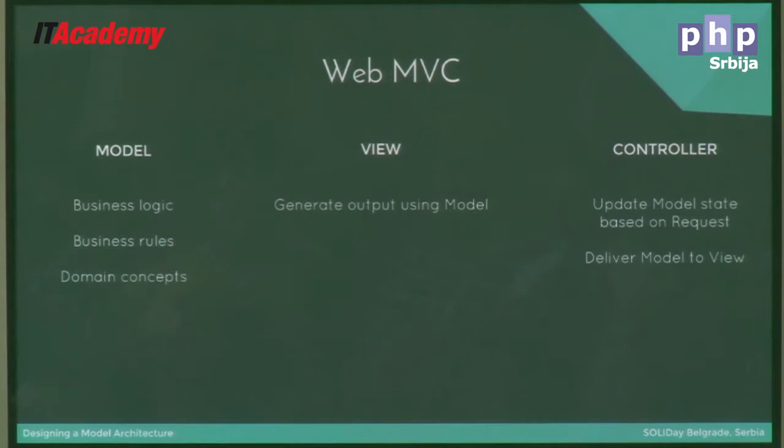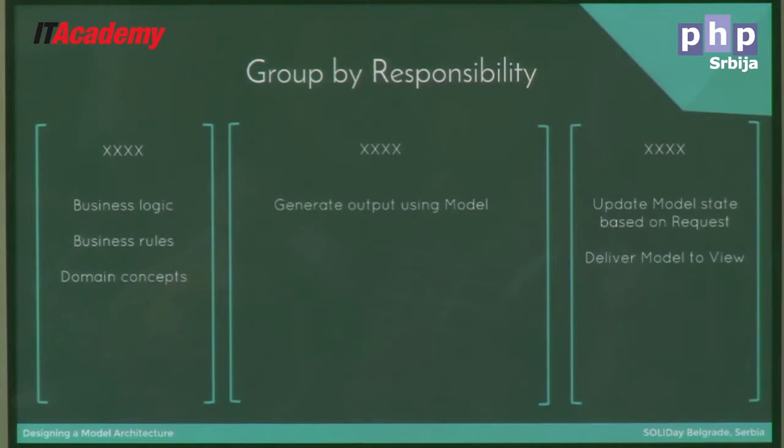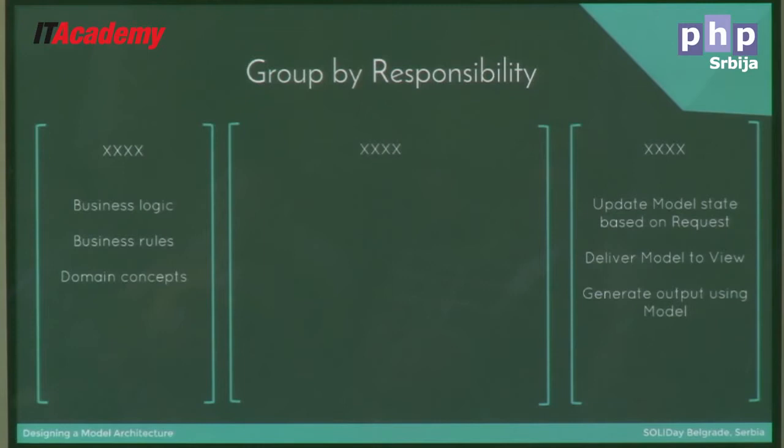Now, if we wanted to separate these responsibilities into different layers, we can try to figure out where the boundaries are by grouping by responsibility. It makes sense that the business logic, the business rules, and the domain concepts all live within one layer. But when we're interacting and generating output — triggering updates to the model, combining the model and the view — to me these all fit together into one separate layer.